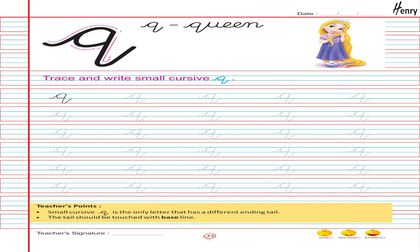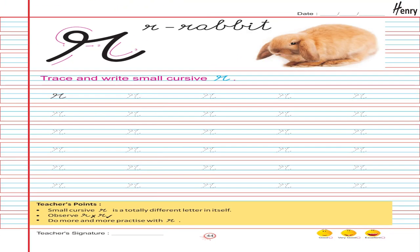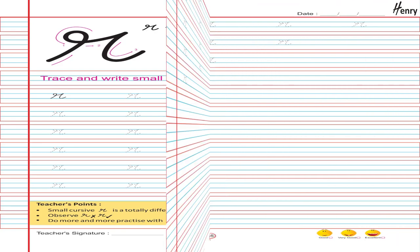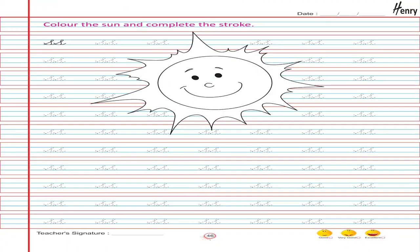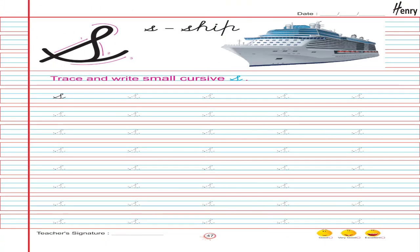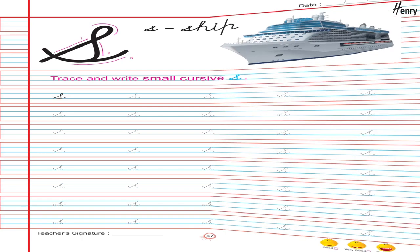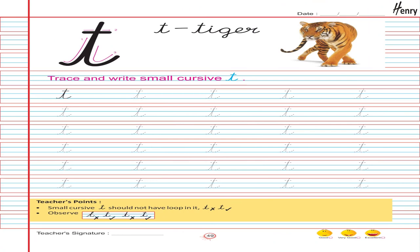Q. Queen. Trace and write small cursive Q. R. Rabbit. Trace and write small cursive R. Color the sun and complete the stroke. S. Ship. Trace and write small cursive S. T. Tiger. Trace and write small cursive T.